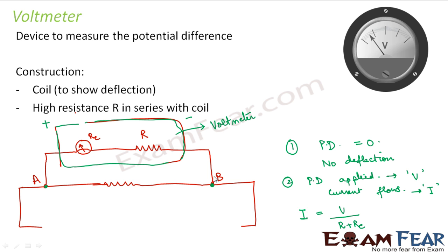When there is no potential difference between A and B, there is no current flow and no deflection. The graduated scale may show zero at center with positive deflection on one side and negative on the other, depending on the scale. Now the key observation is that in the construction of a voltmeter, the resistance R is a high resistance — and that raises an important question about why.